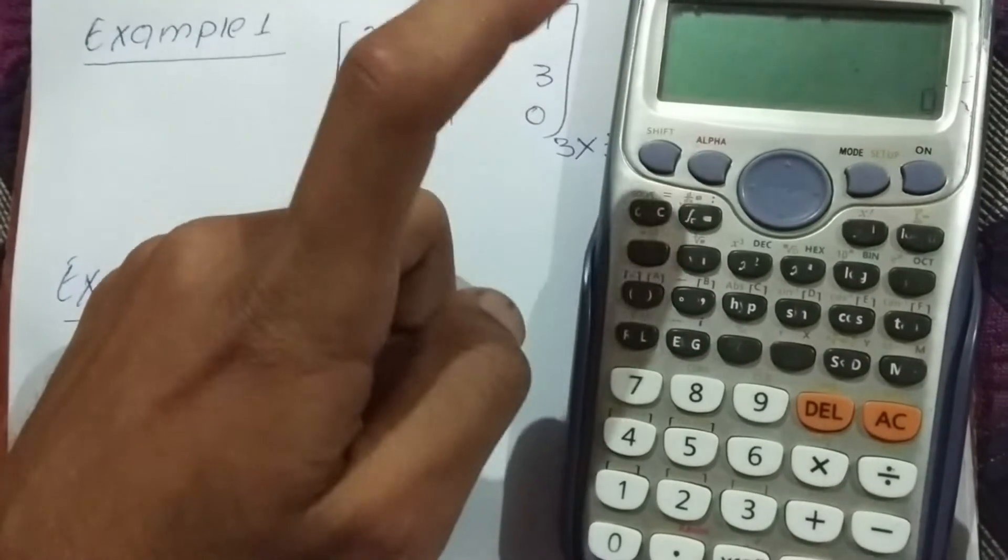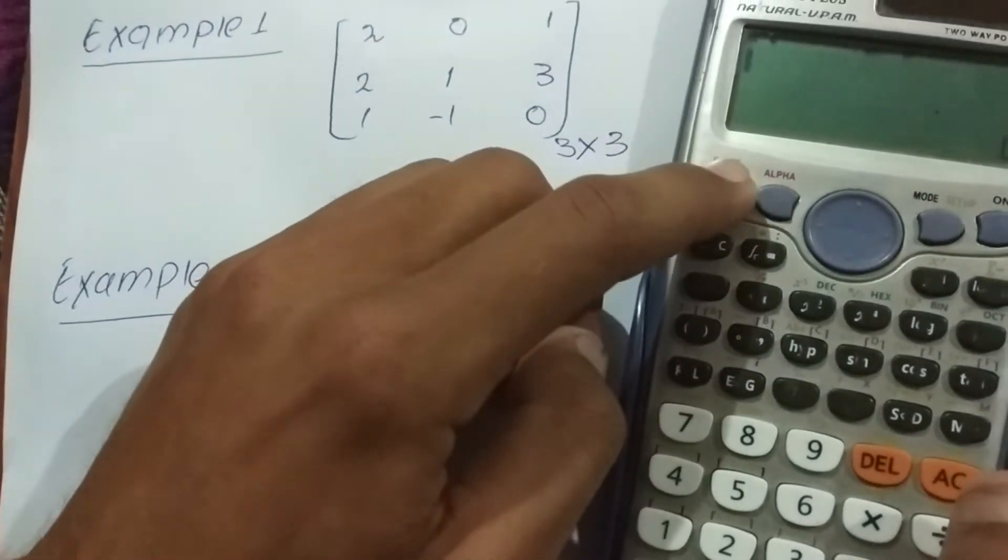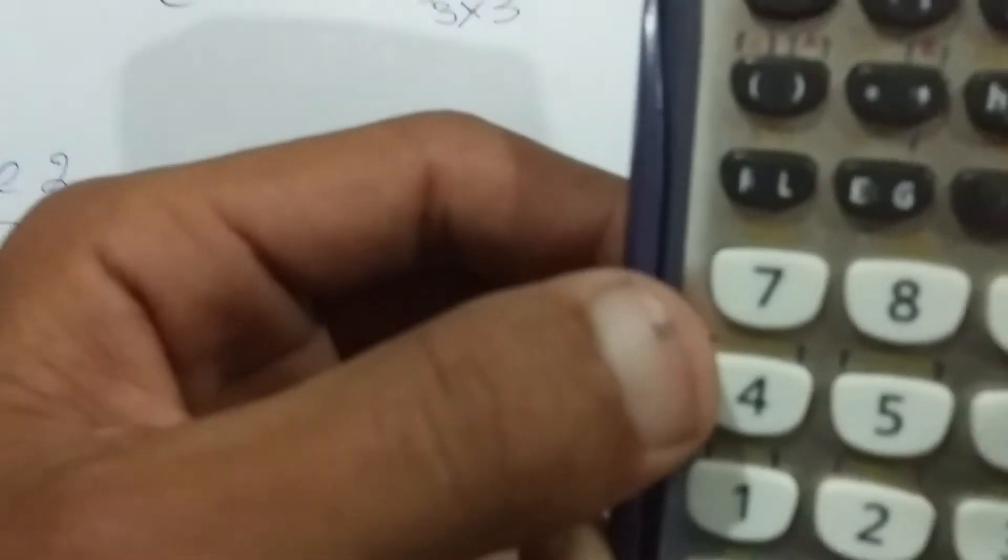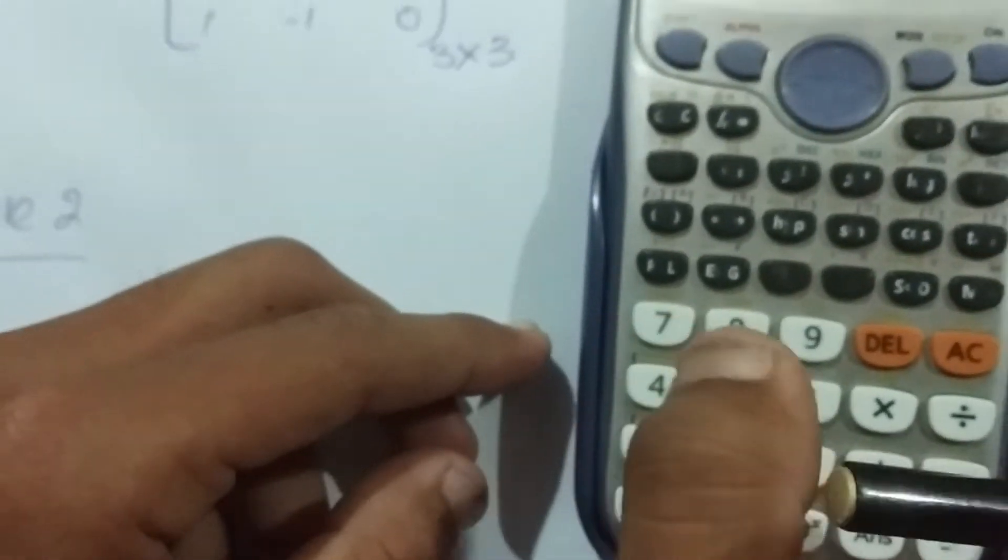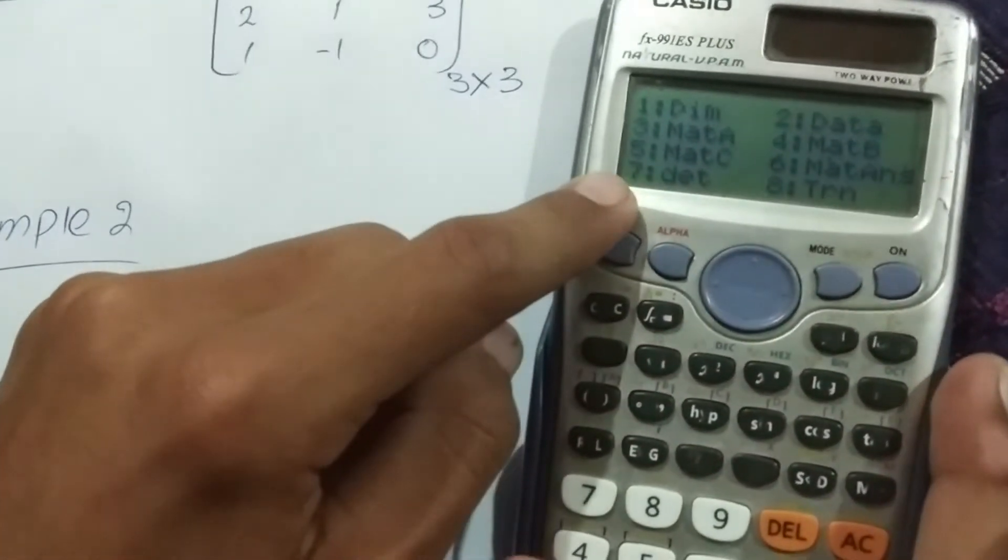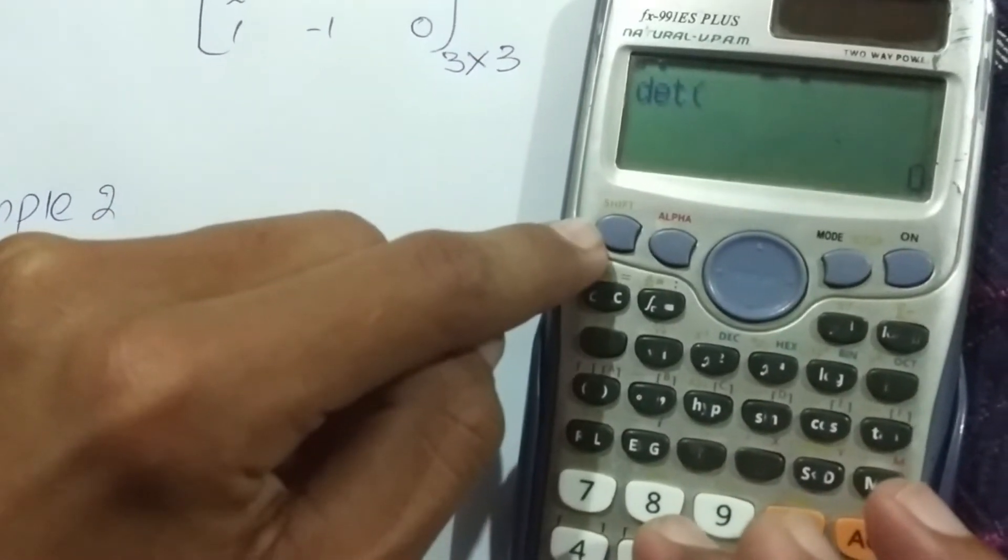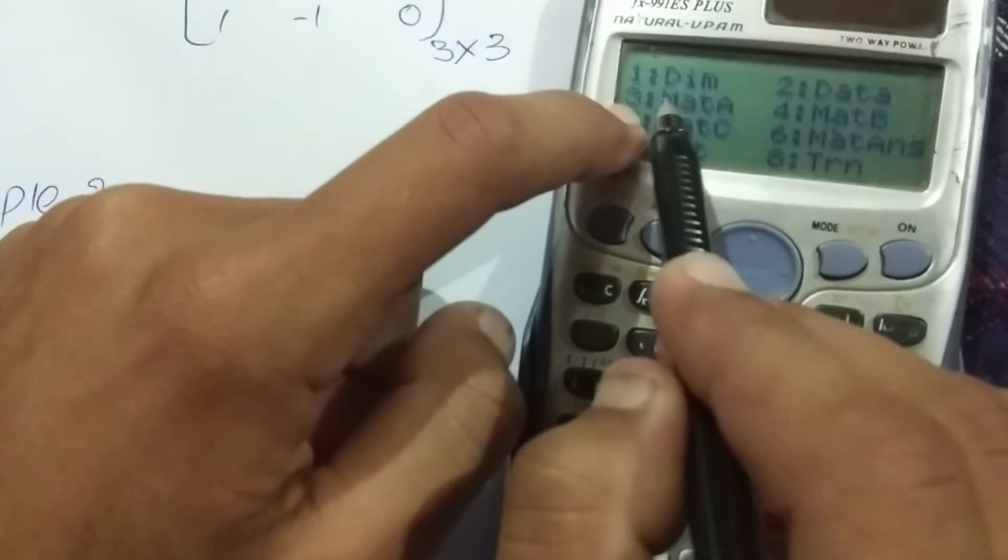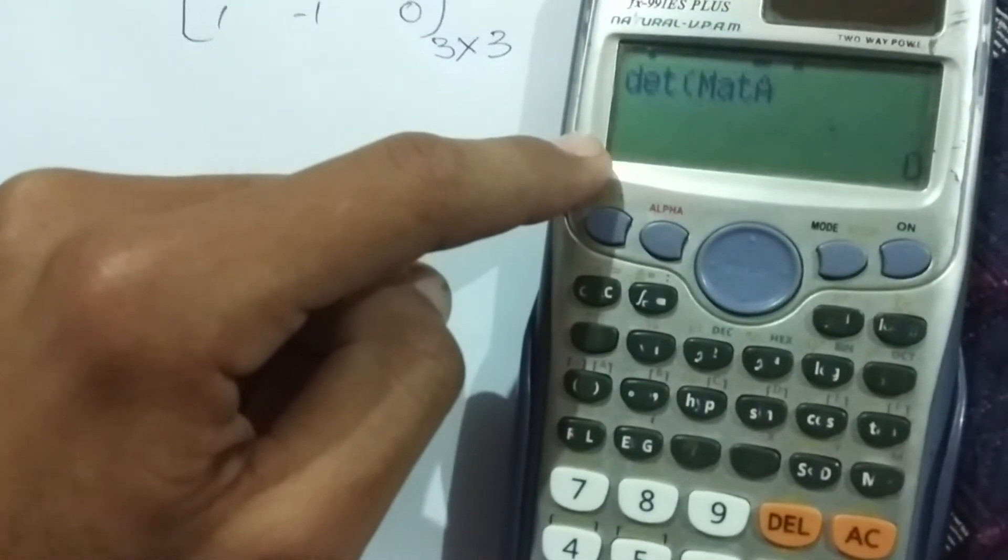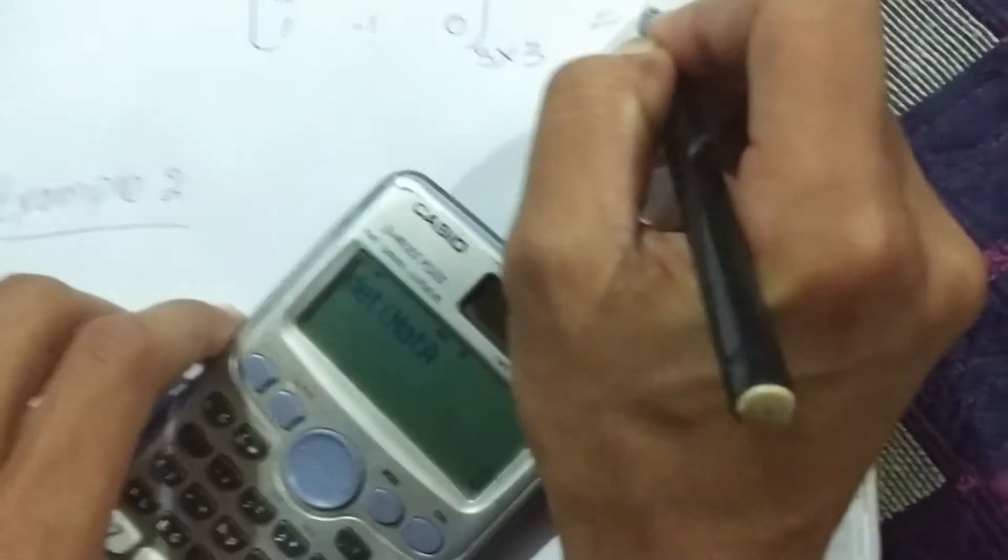Now save this. How to save? Save after pressing AC key. Press AC, then again shift. Now this matrix is saved in mat A. Shift, now press matrix 4. As this is in 4, mat 4. Determinant key is in 7, press the 7th button. Now this matrix is in, now we are going to find determinant. Again press shift, 4, mat A. We have saved our matrix in 3x3 matrix in mat A. So press 3. Now equal to. See here, 3 is our answer.